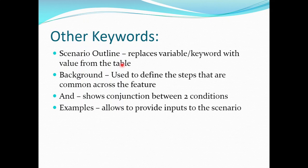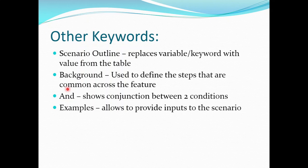The next is the Background keyword. This keyword is used when you want to define common steps across the feature. So let's say in a particular feature file, we have 'login to the application' as a common step — that can be defined under the Background keyword so that we need not write it in every scenario. Once defined under Background, it will be called in every test scenario in that feature file. Later, we have the And keyword. This keyword is mainly used when you want to combine two conditions — for example, after a Given condition, if you want to add another condition, you will use the And keyword.